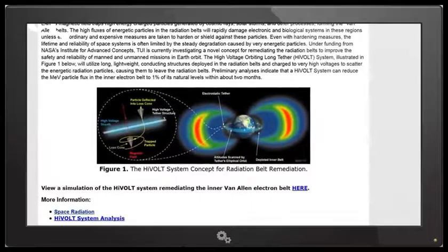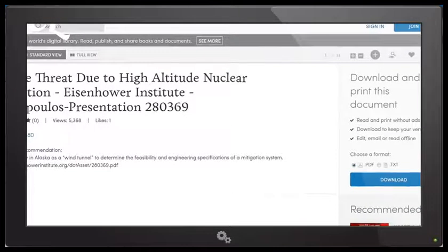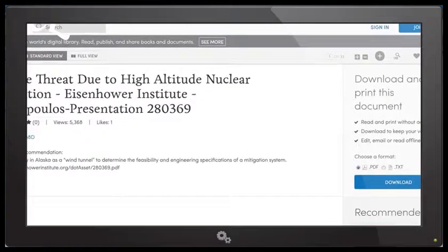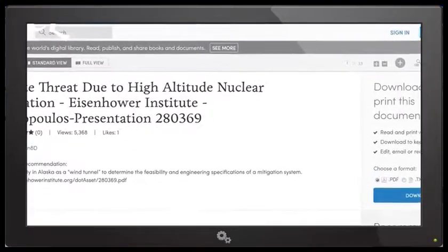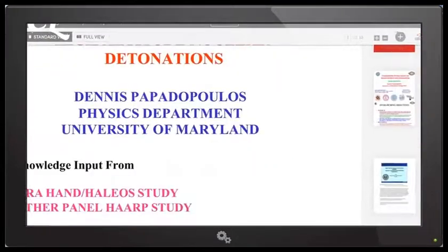All right. So they haven't done that, but what they have done is use HAARP to do the exact same thing. So this is satellite threat due to high altitude nuclear detonation, Eisenhower Institute. And this is Dennis Papadopoulos from the University of Maryland who proposed this. Dennis Papadopoulos to this day is a member of the MURI project and is a leading researcher for HAARP.